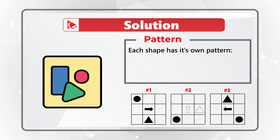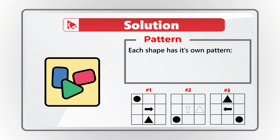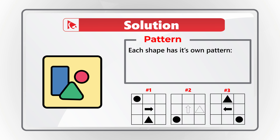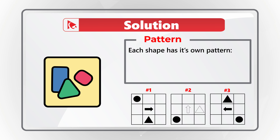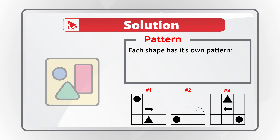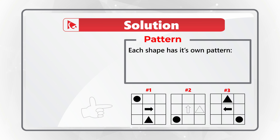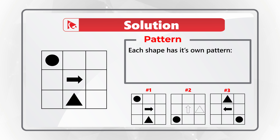Each shape here has its own pattern. Because we have three different shapes inside the 3x3 matrix — we have a circle, we have an arrow, and we have a triangle — we need to look at each individual shape and determine the pattern for each one.